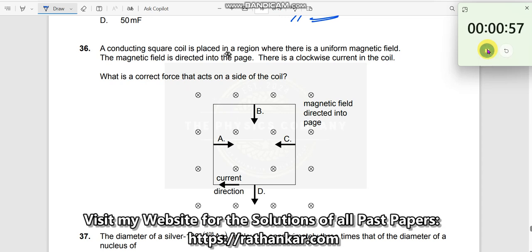Question number 36. A conducting square coil is placed in a region where there is a uniform magnetic field. What kind of magnetic field? This is an inward magnetic field.